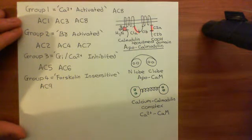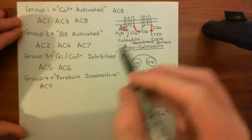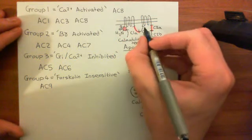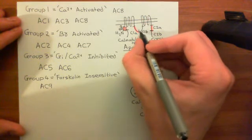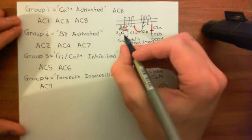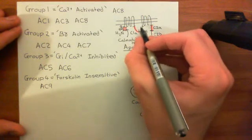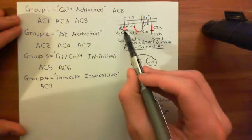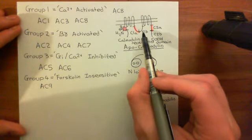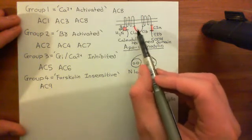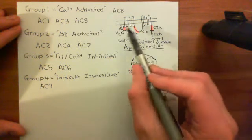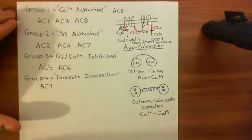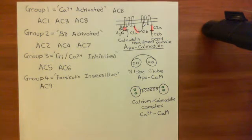The mechanism is slightly different for adenylyl cyclase 1. In this case, the apocalmodulin binds to the C1B domain rather than a special calmodulin recruitment domain on the amino-terminal domain. When calcium rises in the vicinity of adenylyl cyclase 1, the apocalmodulin receives four calcium ions and converts into a calcium-calmodulin complex. The calcium-calmodulin complex stays on the C1B domain and then promotes the dimerization of C1A with C2A to produce an active adenylyl cyclase, which converts ATP into cyclic AMP and pyrophosphate.